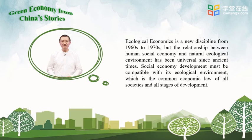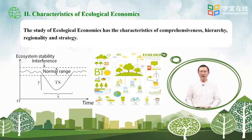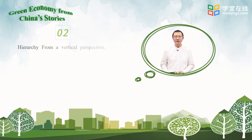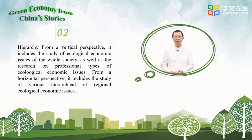Ecological economics is produced according to this law and has unique characteristics different from other disciplines. It has the characteristics of comprehensiveness, hierarchy, rationality, and strategy. Comprehensiveness means ecological economics studies the relationship between economy, society, and natural ecology as a whole. Hierarchy means from a vertical perspective it includes the study of ecological economic issues of whole society as well as professional types; from a horizontal perspective, it includes various hierarchies of regional ecological economic issues.